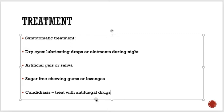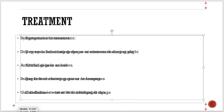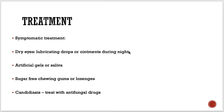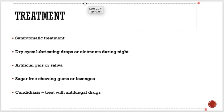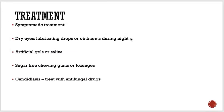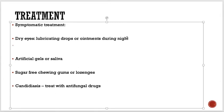Artificial tears are used. A surgical type of treatment called punctal occlusion is also available — they close the drainage from the eye so that artificial tears stay in the eye rather than draining into the nose via the nasolacrimal duct. Good oral hygiene is advised.